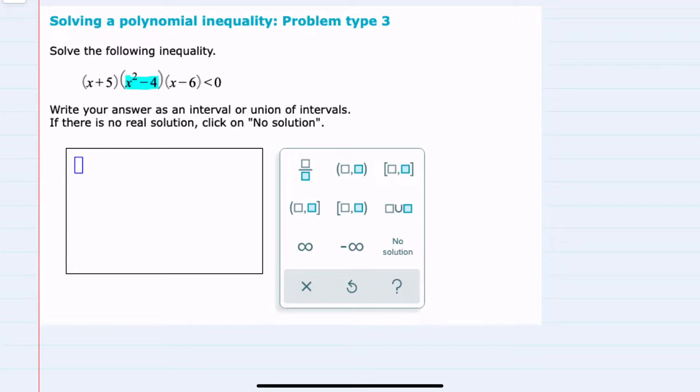In this example, I can see that this middle term can still be factored. This is a difference of two squares, so I'm going to start by rewriting our expression and factoring this as x minus 2, x plus 2, so that our rewritten expression is x plus 5 times x minus 2 times x plus 2 times x minus 6 is less than zero.